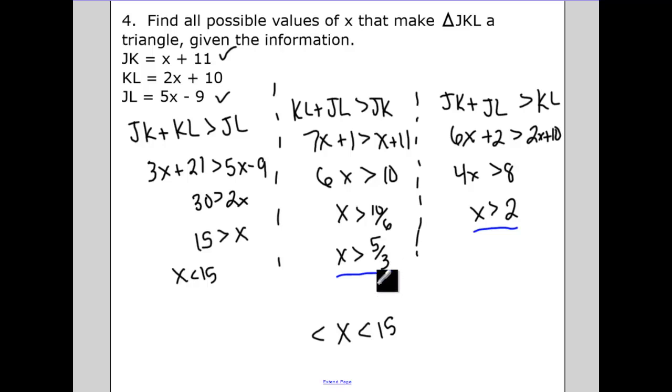Five thirds, well that's one and two thirds. So I know that all my x's have to be bigger than the bigger of these two. Because if I were to pick a number in between one and two thirds and two for x, one of these inequalities wouldn't be true. And I need to pick the numbers that are going to make all three inequalities true. So that's why x is going to be between two and fifteen.